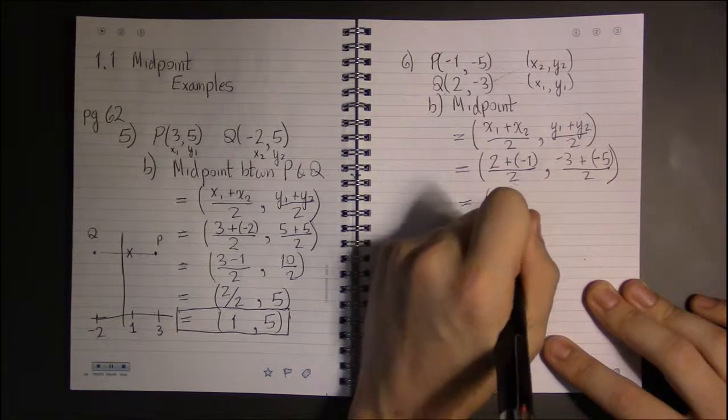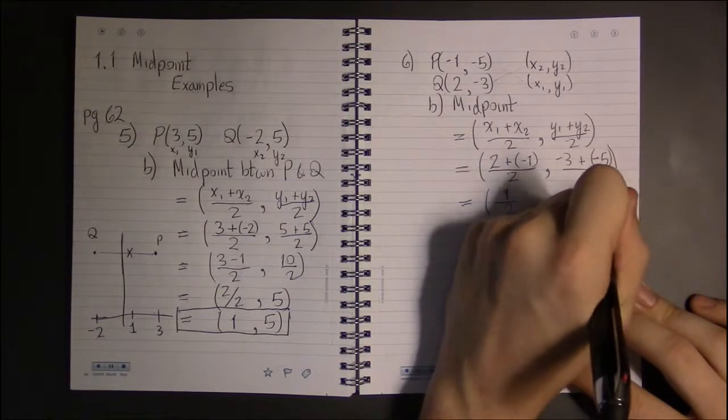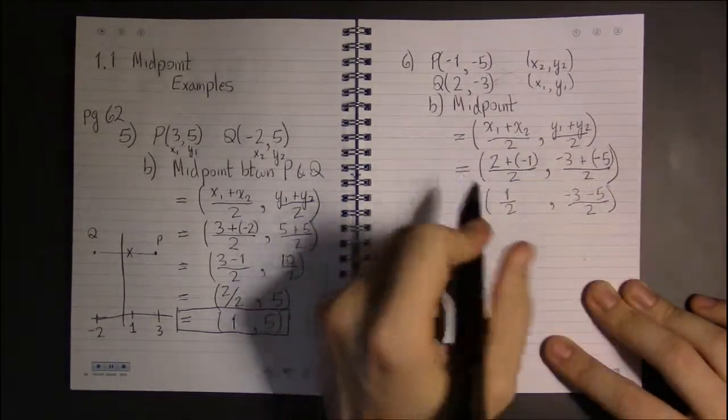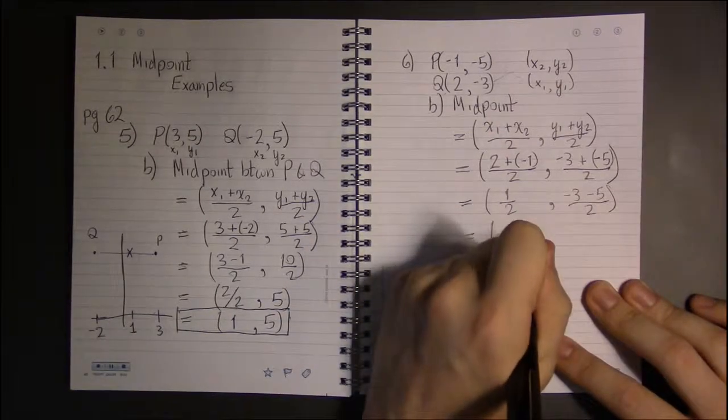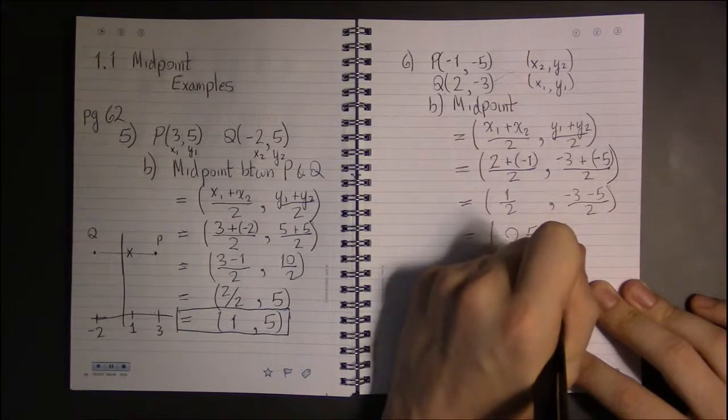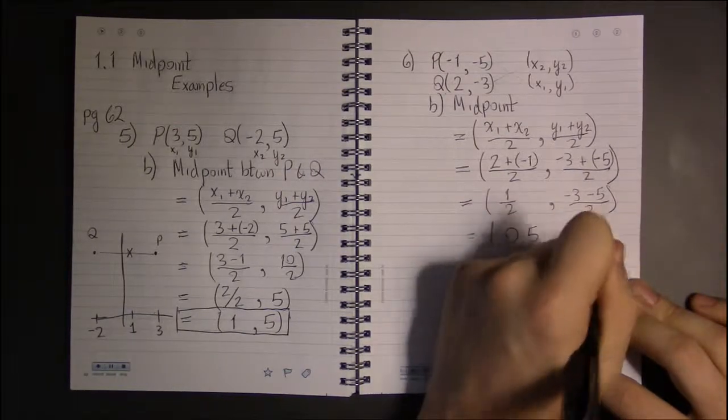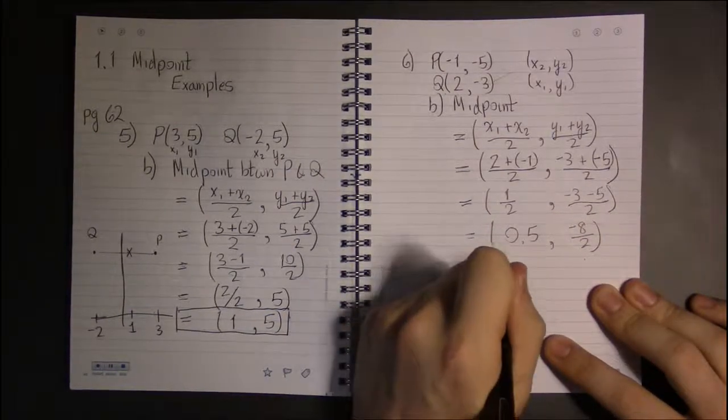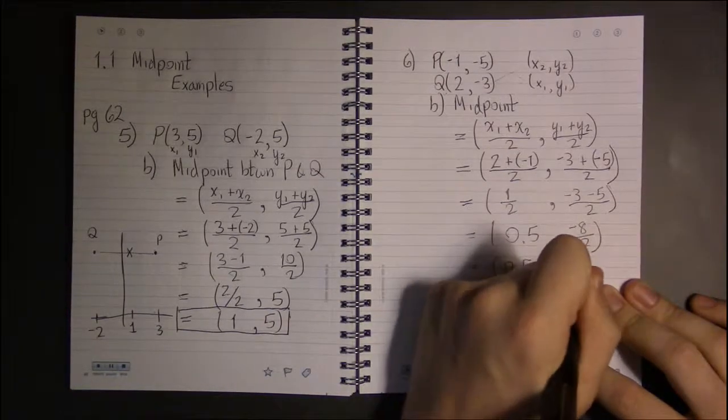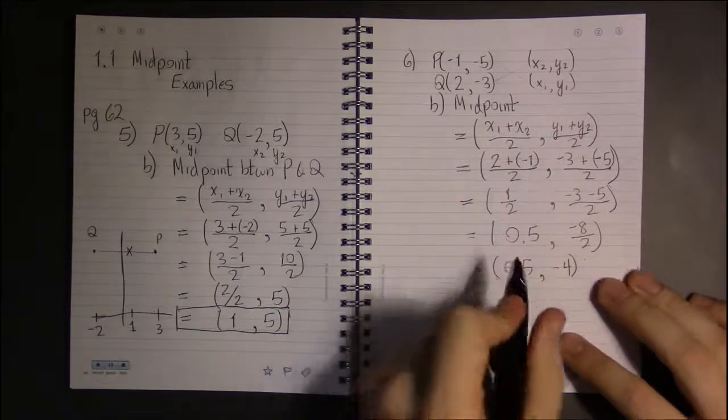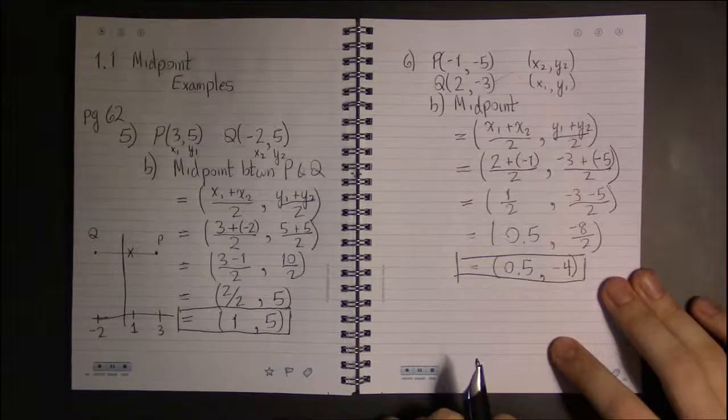This is 1 over 2, one half. This is minus 3 minus 5, so that's like just adding 3 and 5 but letting the result be negative. So 3 and 5 is 8, so this will be minus 8 over 2, which is minus 4. And there's nothing left to do, no more operations. This right here, that's our midpoint.